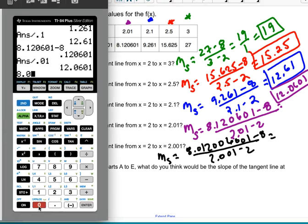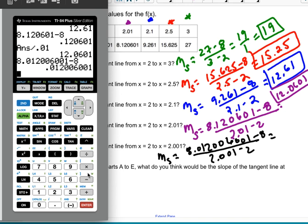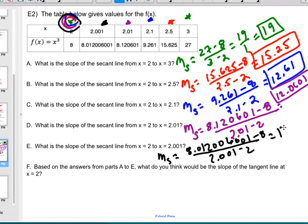So 8.012006001 minus 8 divided by 0.001. I get 12.006001. So now the question was, based on these, what number do we think that the tangent slope is going to have? If you look at how this data is trending, it becomes pretty clear that as I get closer and closer and closer, this seems to be trending to a 12. So my guess is that the tangent slope is a 12.